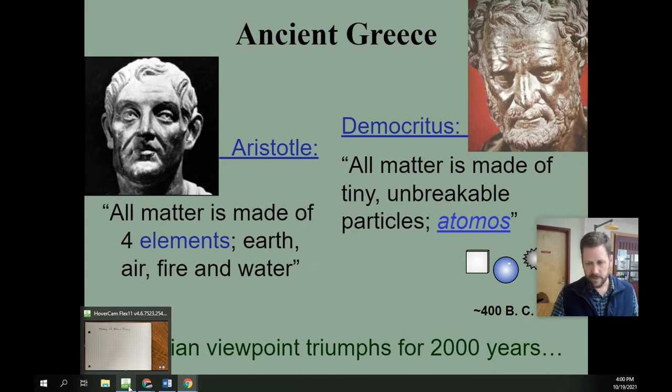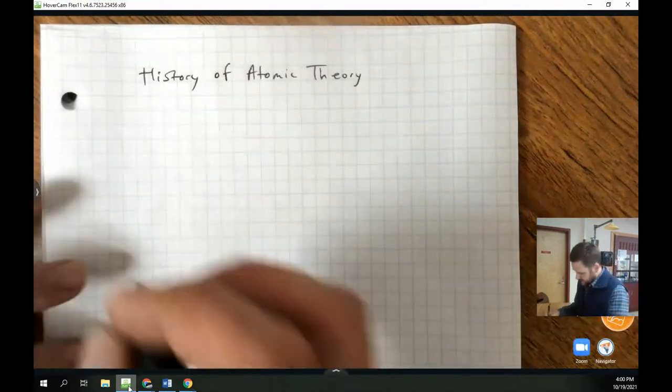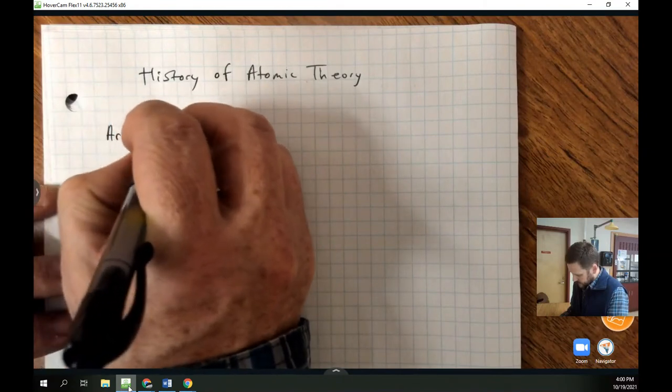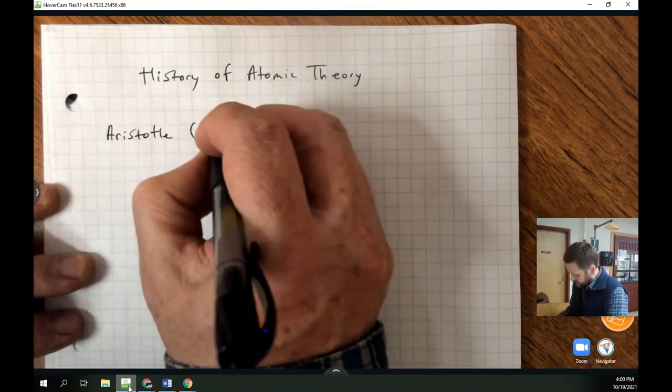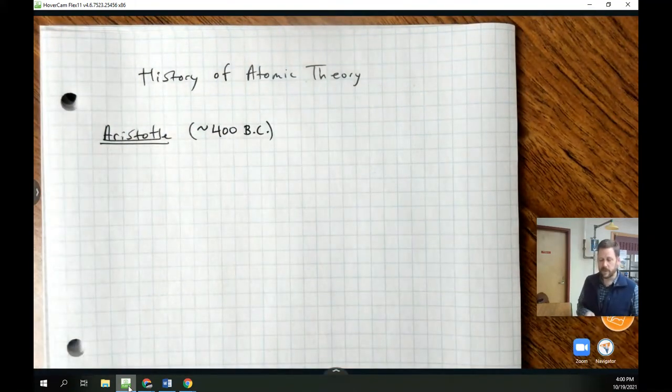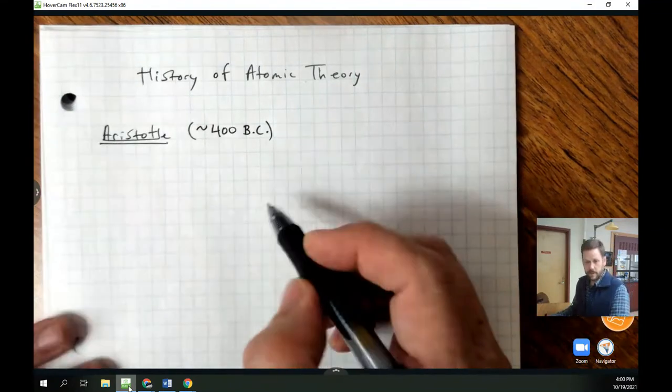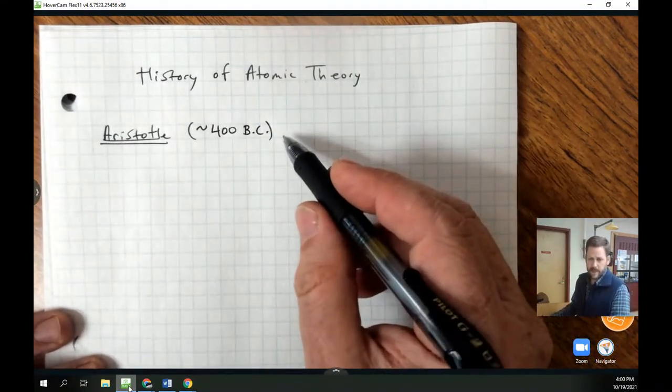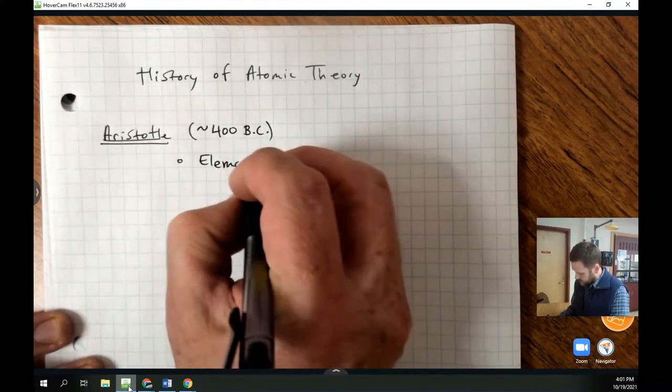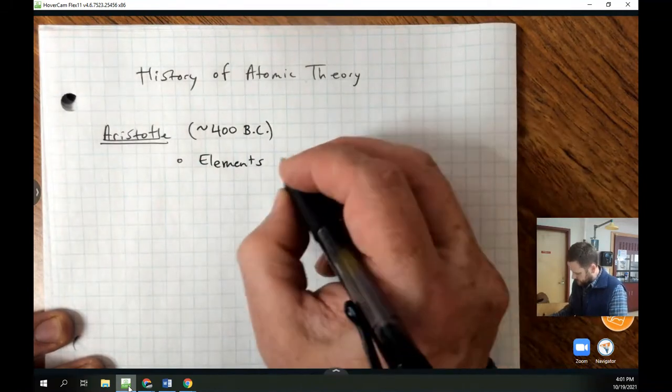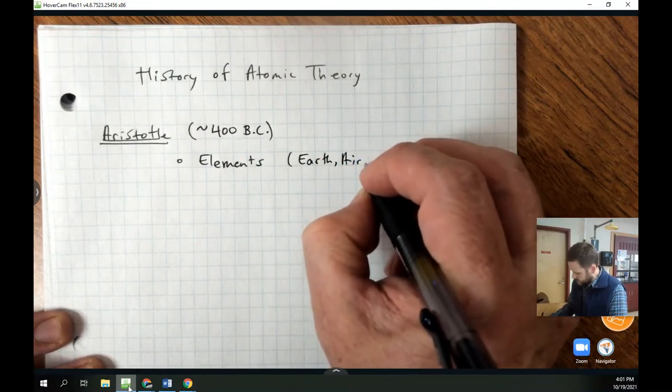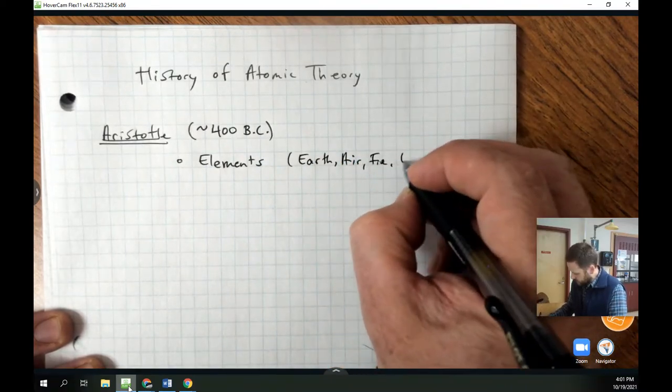So here's how I'd like to summarize this in our notes. This is first going to start with a name, and that is Aristotle, and then a year, approximately 400 B.C. And don't quote me on that, but that's the general date range for ancient Greece philosophy. We're going to associate Aristotle with the idea of elements. In other words, the idea that the universe is composed of just a few elements. These are usually described as earth, air, fire, and water.